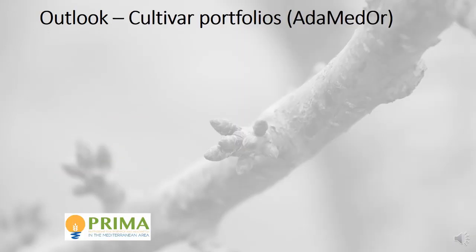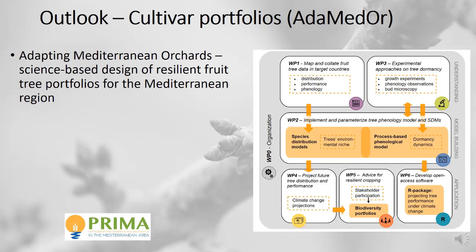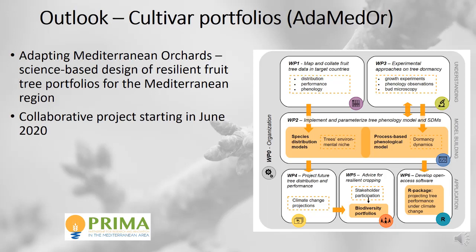A new project is starting soon in our group called ADAM-EDOR — Adapting Mediterranean Orchards: Science-based design of resilient fruit tree portfolios for the Mediterranean region. This is a collaborative project starting hopefully in June 2020 with partners in Spain, Tunisia, and Morocco. It involves dormancy modeling, predictions of which species and cultivars will be suitable in the Mediterranean region in the future, experimental approaches to tree dormancy, and further development of our R packages and phenology analysis and projection tools.